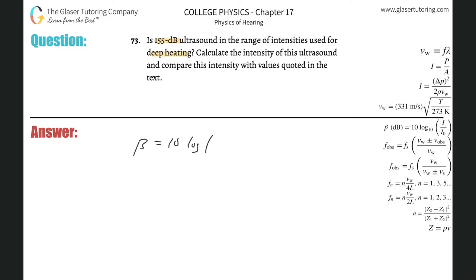to 10 times the log of the intensity divided by the threshold, which is 10 to the minus 12. Plug in the decibel value into beta, so that's 155 equals 10 times the log of I over